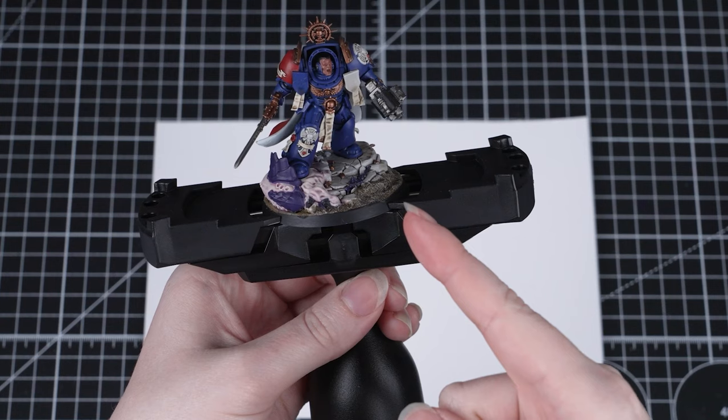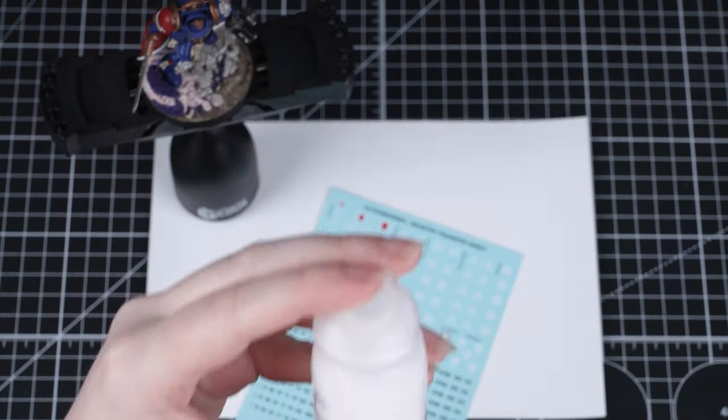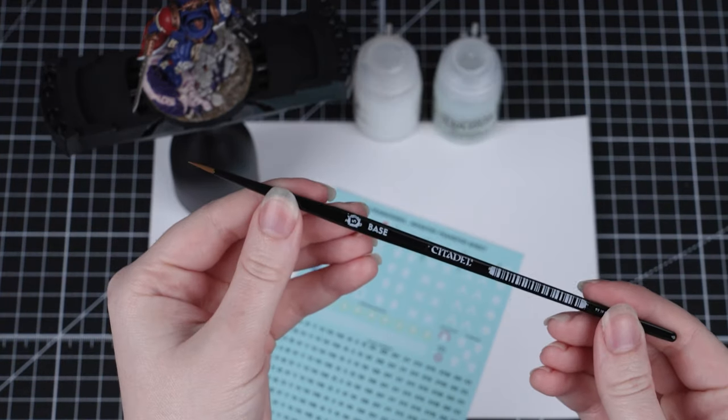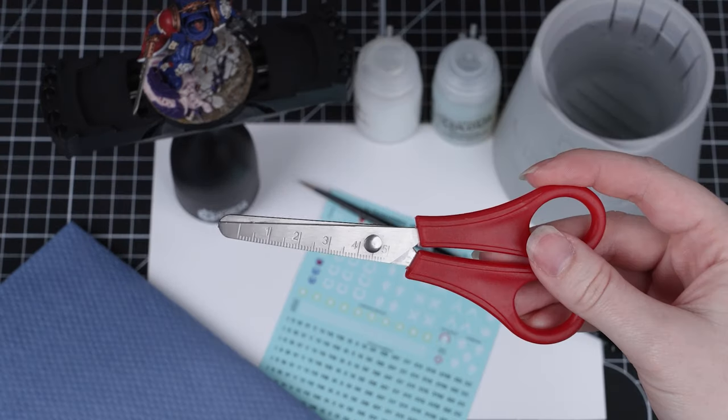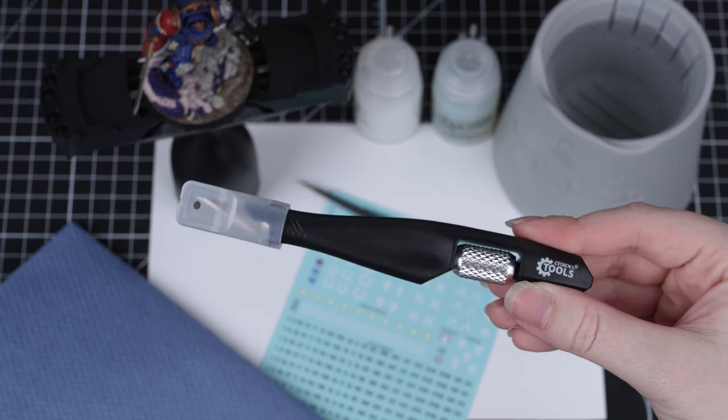Before we start we'll need to get a few things together. You'll need your miniature, the transfers, some Ardcoat and Lahmier medium. You'll also need a paintbrush, some tissue paper, and some clean water. You'll also need something to cut out your transfer. You could use scissors or a hobby knife.